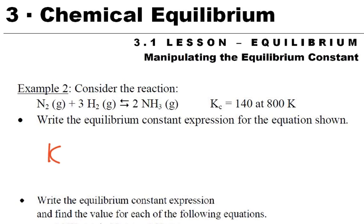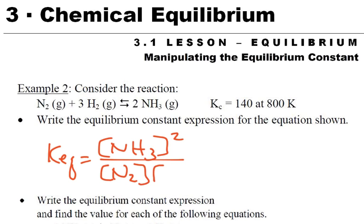So we'll say K_EQ equals the concentration of NH₃ squared over the concentration of N₂ and concentration of H₂ cubed. So that's my expression. And it has a value of 140 at 800. Now this at 800, we're probably not going to need that, but it is proper to say it because the constant is going to be different at different temperatures.